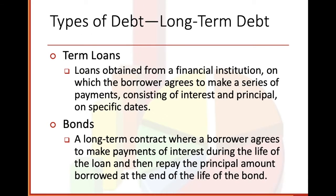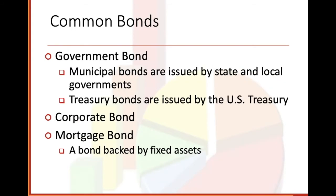Now we're going to look at long-term debt. Term loans: loans obtained from financial institutions on which the borrower agrees to make a series of payments consisting of interest and principal on specific dates. Bonds: a long-term contract where a borrower agrees to make payments of interest during the life of the loan and then repay the principal amount borrowed at the end. Common bonds include government bonds, municipal bonds issued by state and local governments, treasury bonds issued by the U.S. Treasury, corporate bonds, mortgage bonds, and bonds backed by fixed assets.